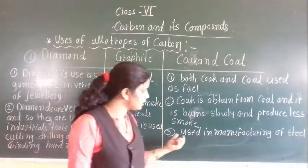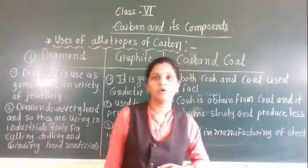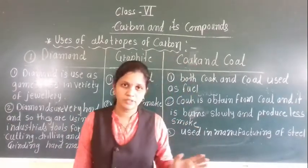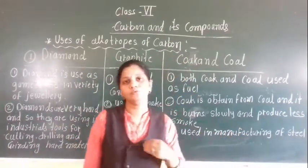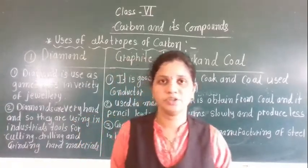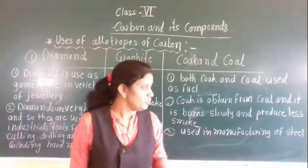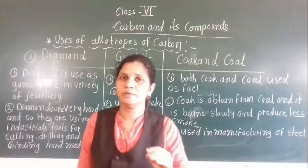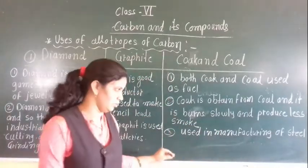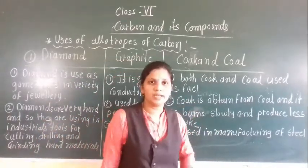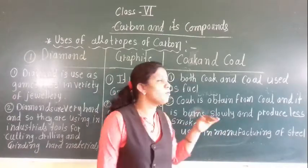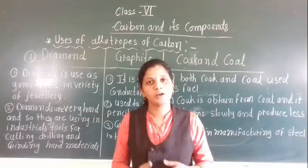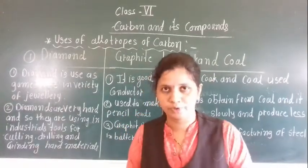Coke is used in the manufacturing of steel. These are two or three examples I have given here. If you find more uses of coal, graphite, or diamond, just write them down in your chemistry notebook.